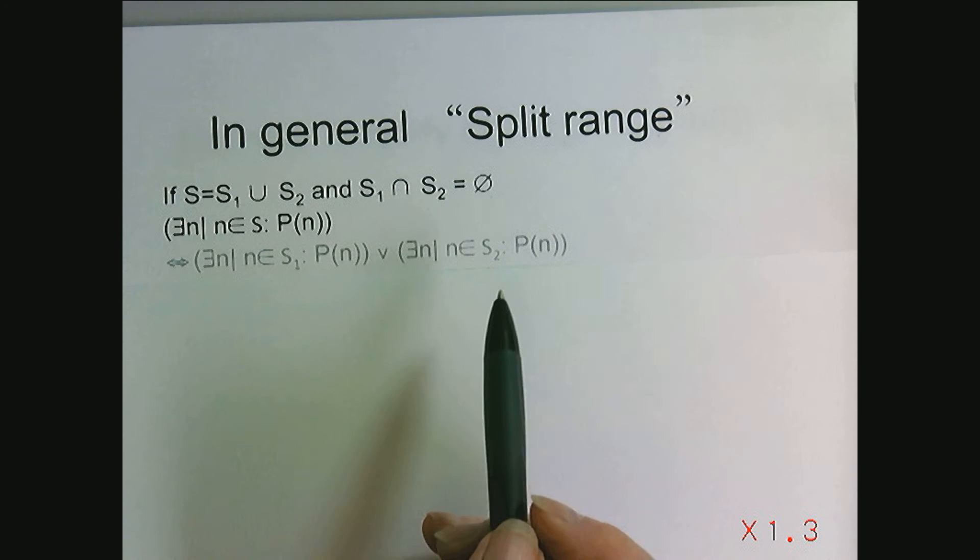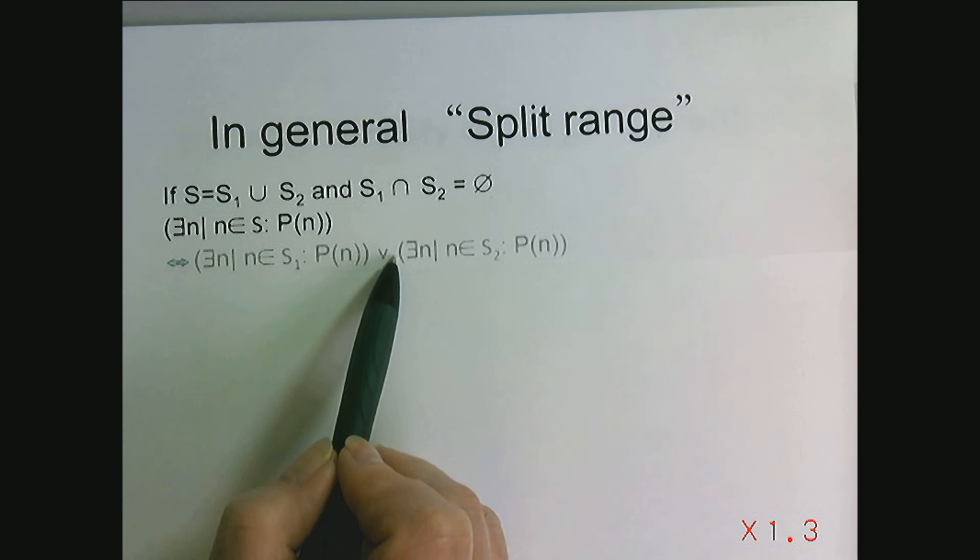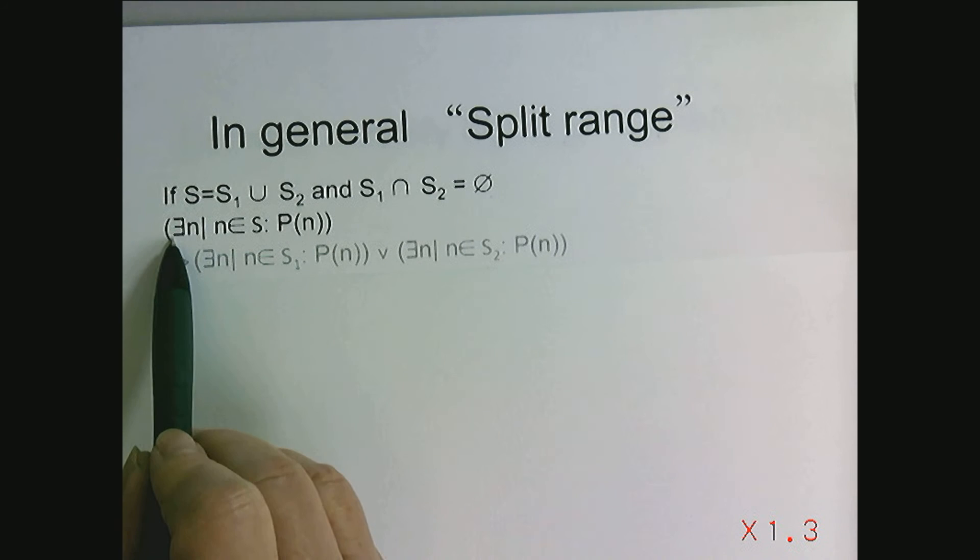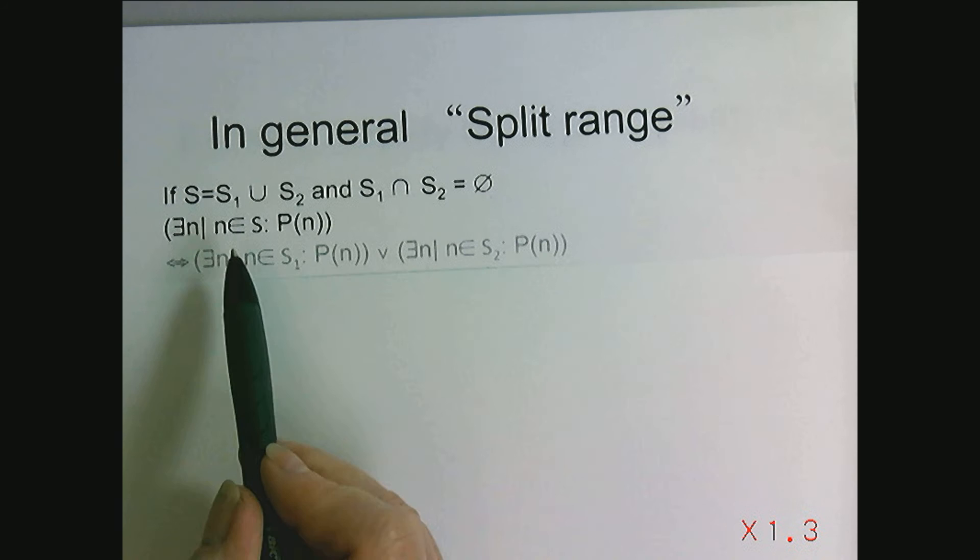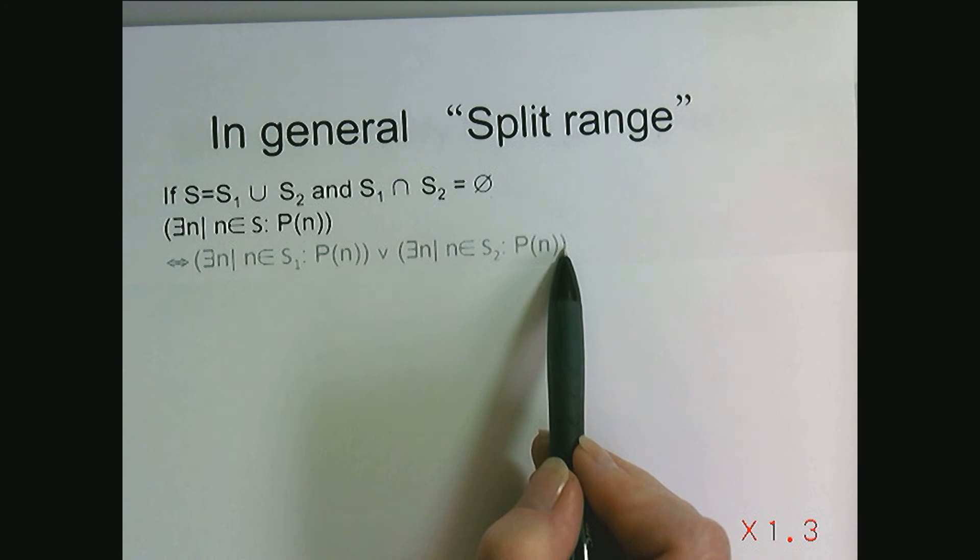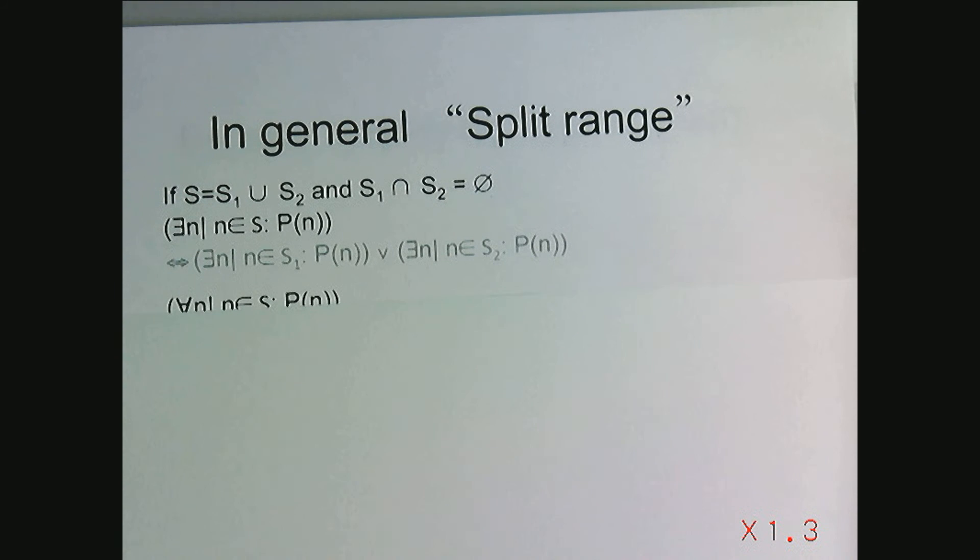This just extends what I was just describing. Notice that the Boolean operator corresponding to there exists is OR, or disjunction. Why does this work? Well, it's actually because disjunction is associative, so you can group.